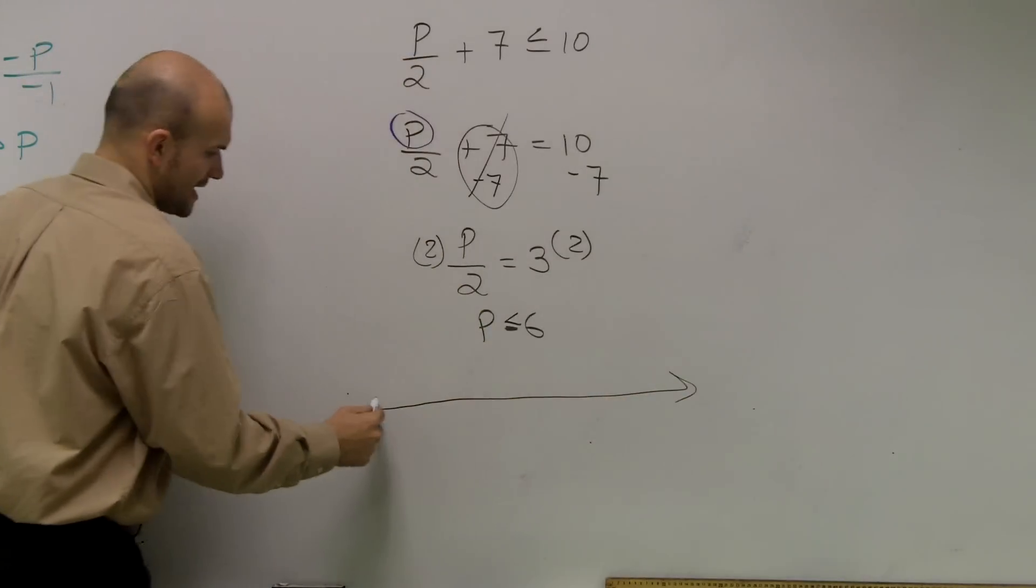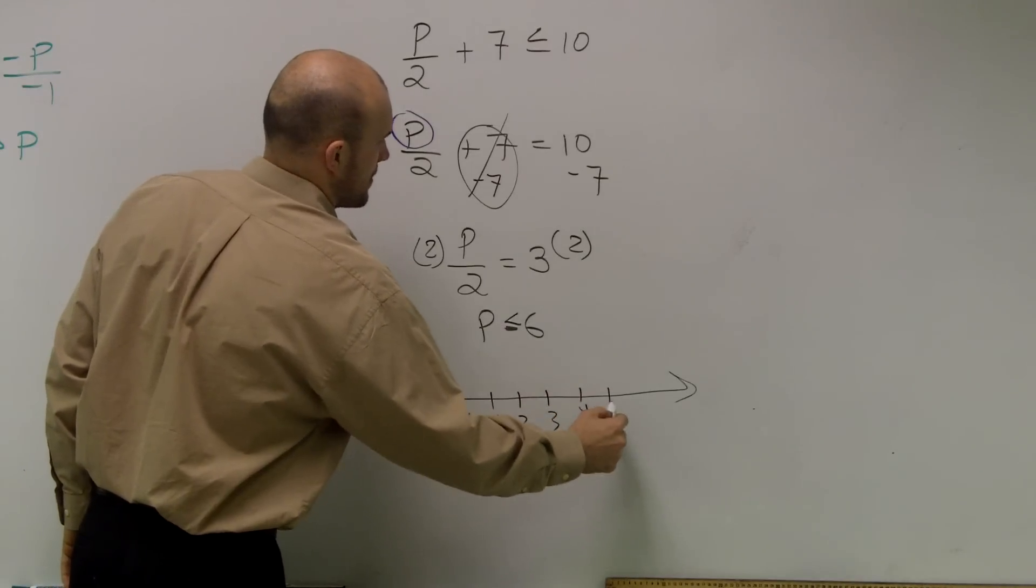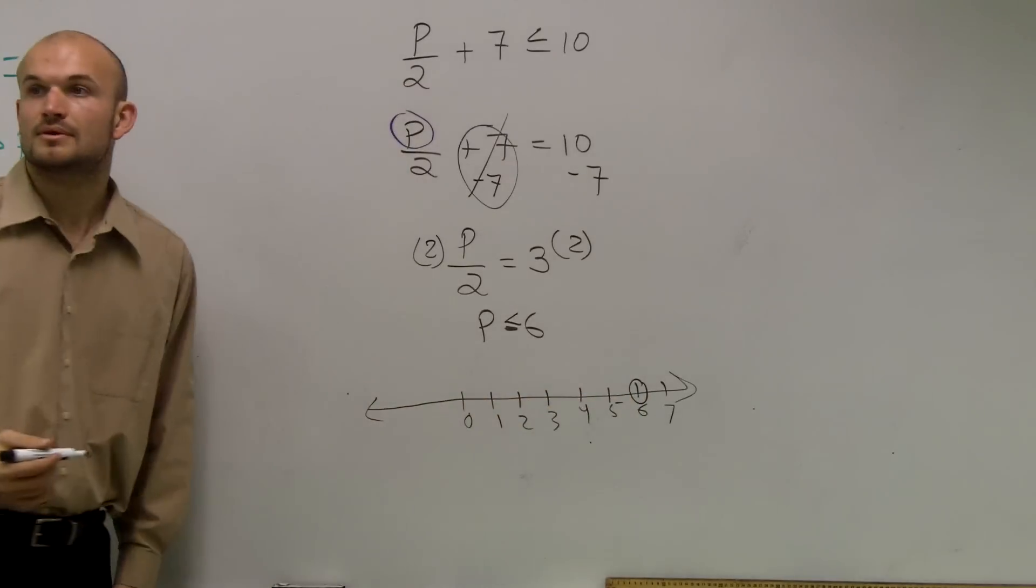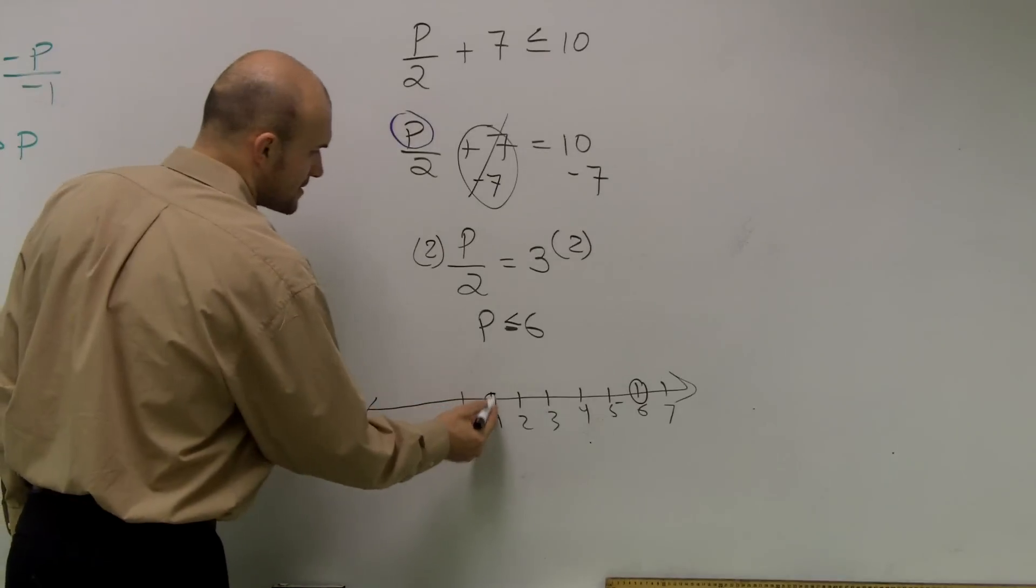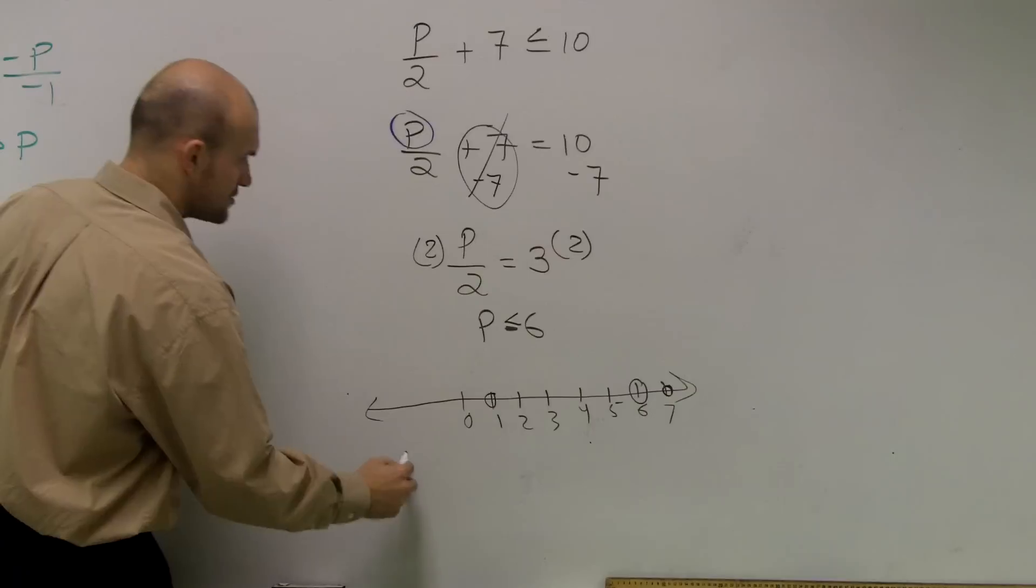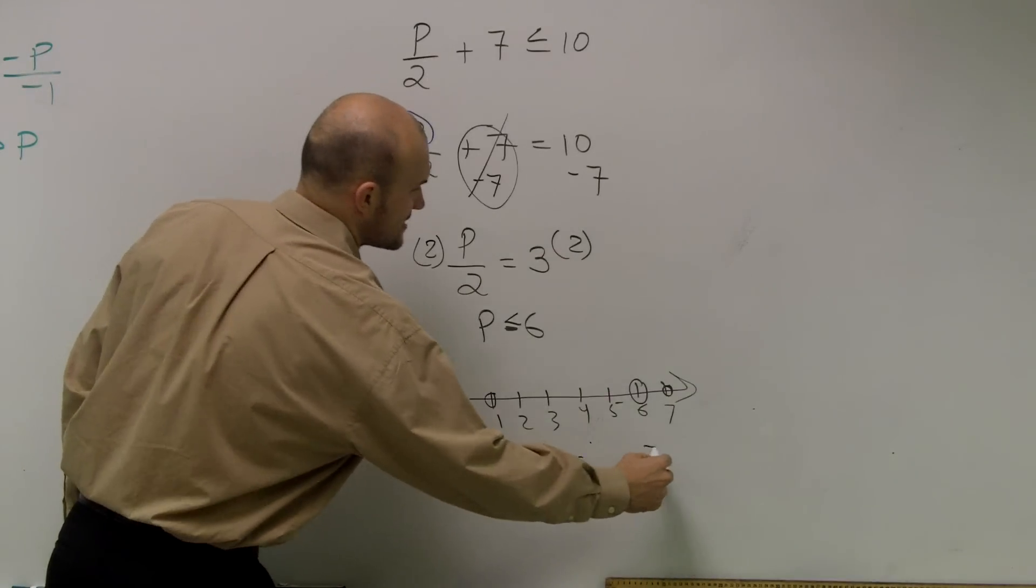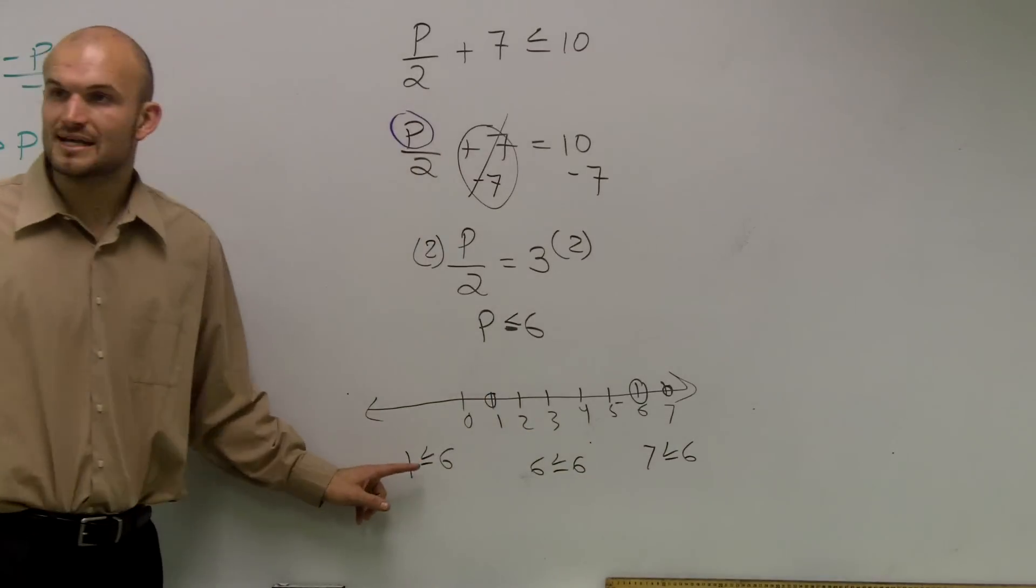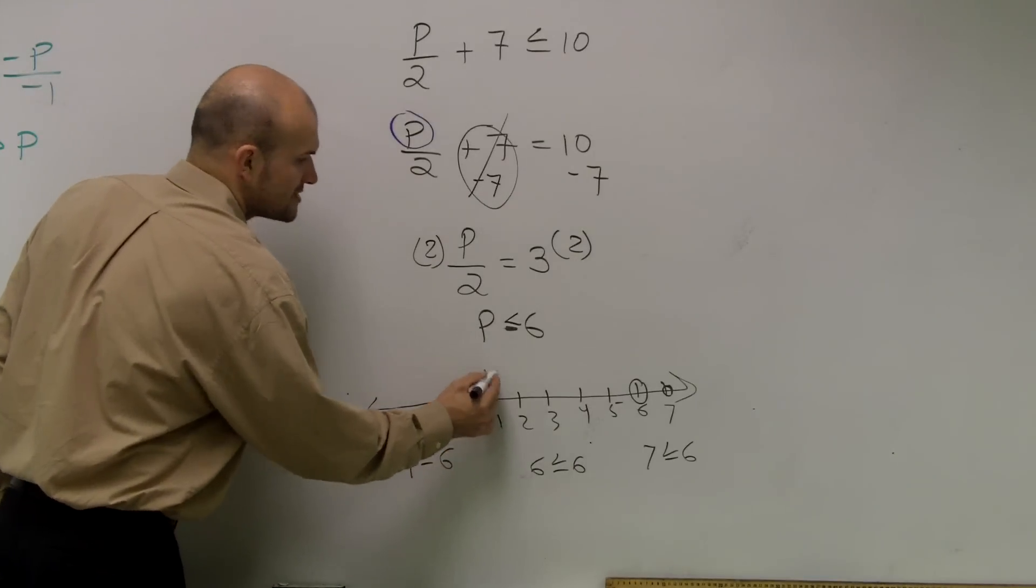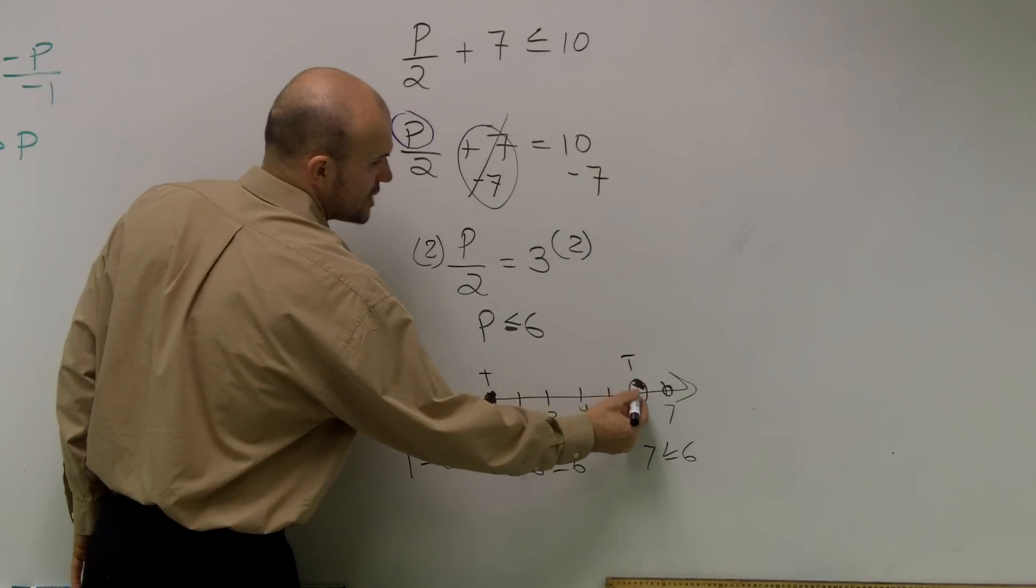So now I do a number line. And what we're going to do is make a nice big dot at 6. Then I pick a point to the left and I pick a point to the right. And then you plug those numbers into your inequality. So, 1 less than or equal to 6, 6 less than or equal to 6, and 7 less than or equal to 6. Is 1 less than or equal to 6? Yes, that's true. So you shade in your little point and you say true. Is 6 less than or equal to 6? Yes. Put it true, shade in your big point.